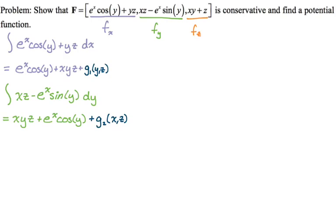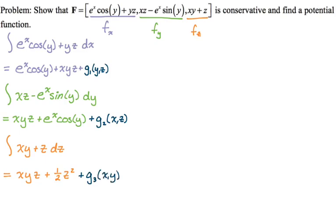Now we move on to partial z — we want to integrate with respect to z. The integral of xy is xyz. The integral of z is one-half z squared. Then we add in a function g3 — if there had been a function of just x, just y, or x and y, its derivative would have been zero. And if you look at it, e to the x times cosine of y is exactly that kind of function, so we already found something like that.